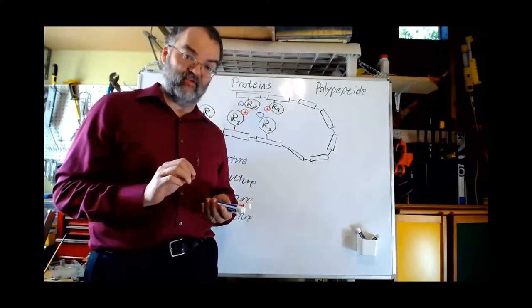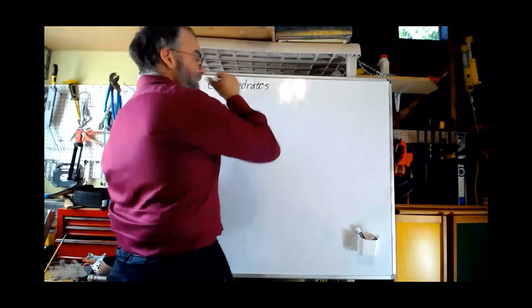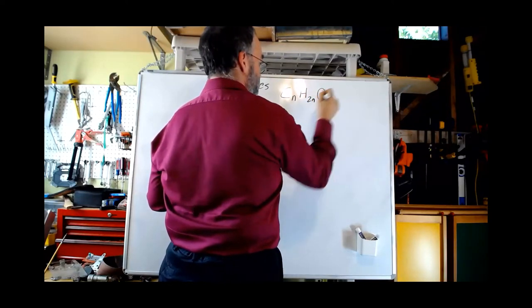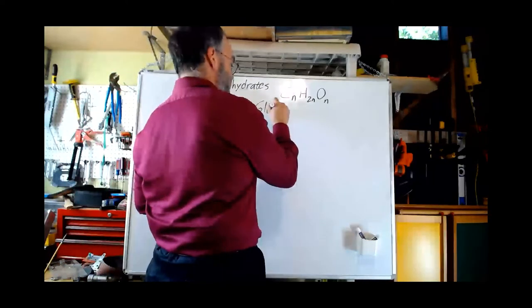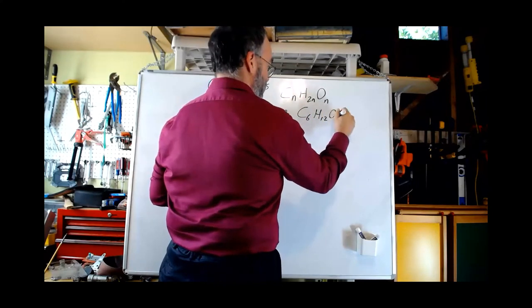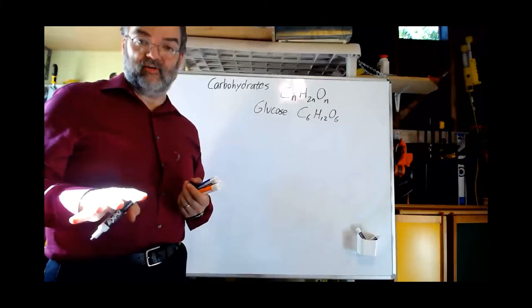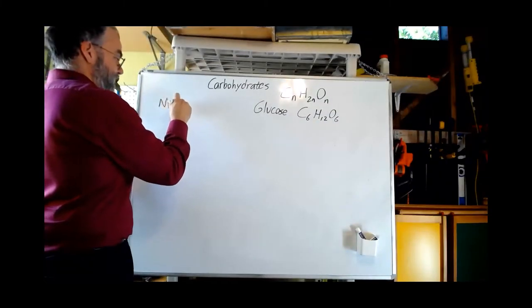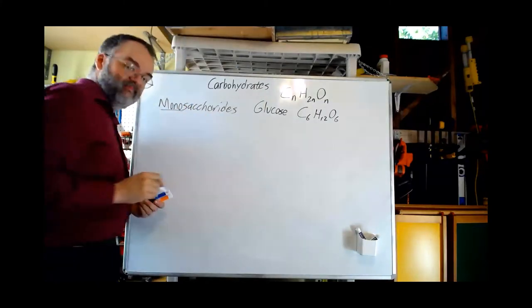Now let's go on to our next category of biomolecules: carbohydrates. Carbohydrates are another kind of biomolecule. Usually their chemical formula is something like C_n(H2O)_n — some number of carbons, about the same number of oxygens, and about twice that number of hydrogens. For example, glucose is C6H12O6: six carbons, six oxygens, and twelve hydrogens. These simpler carbohydrates, which are totally valid molecules on their own, are called monosaccharides. Mono meaning one, saccharide meaning sugar — so a simple sugar.